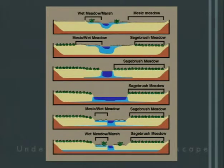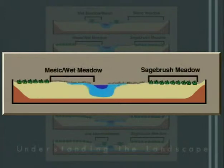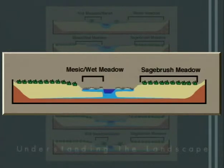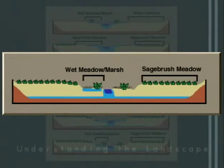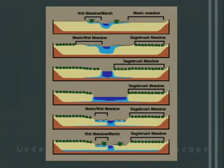In the Proper Functioning Condition diagram, a healthy stream is truly connected to streamside vegetation reflecting high moisture availability. As the channel down-cuts — from water diversion, management activity, or other perturbation — the water table is pulled down, the saturated zone lowers, and over time there is no connection between surrounding vegetation. The system evolves from a mesic condition into almost a semi-arid condition.